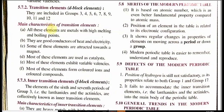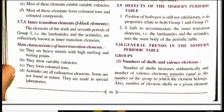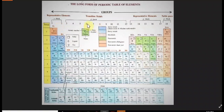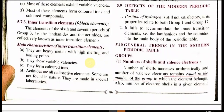Transition elements are included in groups 3 through 12. Main properties: all are metals with very high melting and boiling points; they are very good conductors of heat and electricity; some are attracted to magnets; most are used as catalysts in chemical reactions; most exhibit variable valency; most form colored ions and colored compounds. Let me show you the figure: these are representative elements, and these are transition elements in the middle groups.